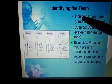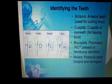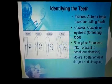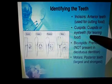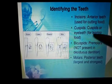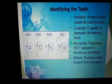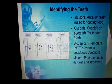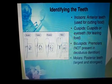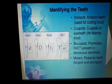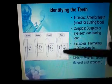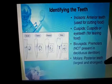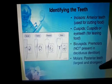The incisors are the anterior teeth used for cutting food. The cuspids, which mean a single cusp, are also named eye teeth and are used for tearing food. The bicuspids or premolars are not present in the deciduous dentition — they are only present in permanent dentition. The molars are the largest posterior teeth, and they are the largest and strongest.